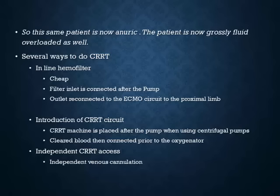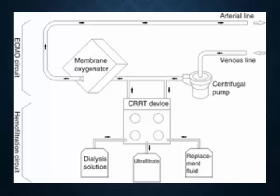There are no reports of cannulae getting infected — likely due to the high flows through them. Infections are usually from associated PICC lines or central lines. For the same patient now aneuric and grossly volume overloaded, renal replacement therapy can be done three ways: an inline hemofilter (cheapest, filter inlet connected after the pump with outlet reconnected to the ECMO circuit), integrating a CRRT circuit, or placing a separate dialysis catheter completely segregated from the ECMO circuit.